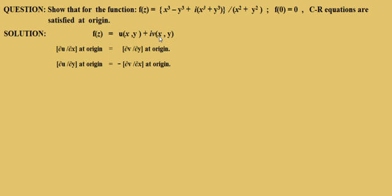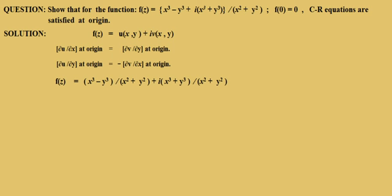Here u and v are the real and imaginary parts of the function. First of all, we have to find the real and imaginary part of the given function. The given function f(z) can be written as f(z) = (x³ − y³)/(x² + y²) + i(x³ + y³)/(x² + y²). The real part is (x³ − y³)/(x² + y²) and the imaginary part is (x³ + y³)/(x² + y²).